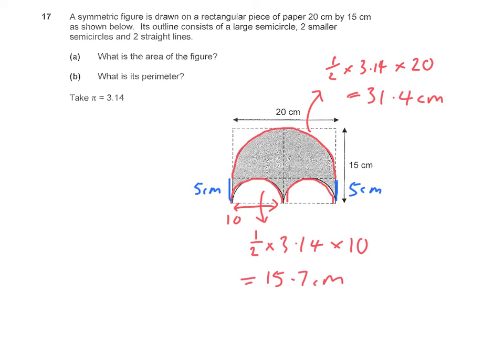So in total, the perimeter should be 31.4cm plus 5cm plus 15.7cm plus 15.7cm plus 5cm. So that will give us 72.8cm.